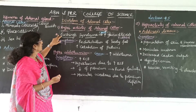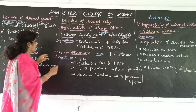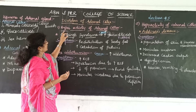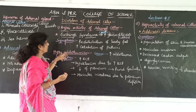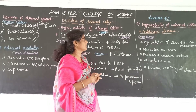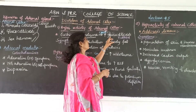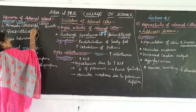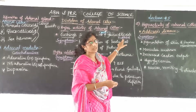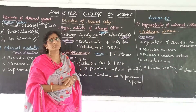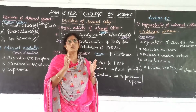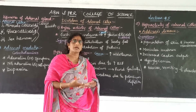Under hyperactivity of adrenal corticosteroids, we have two diseases: Cushing Syndrome and Hyperaldosteronism. Cushing Syndrome is an important disorder. Its symptoms include redistribution of fat. Cortisol levels are elevated, which affects protein catabolism.